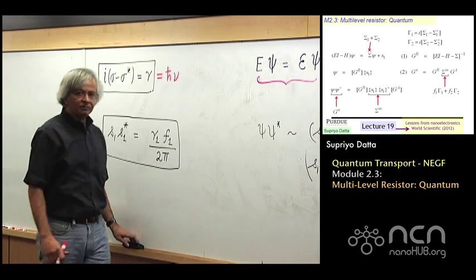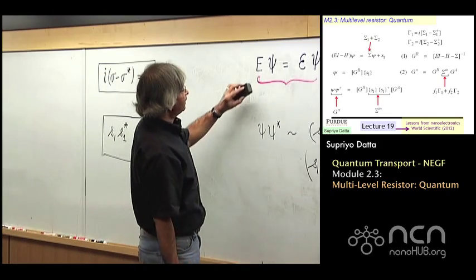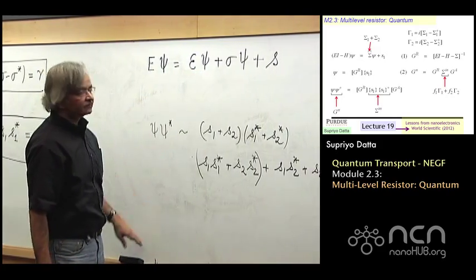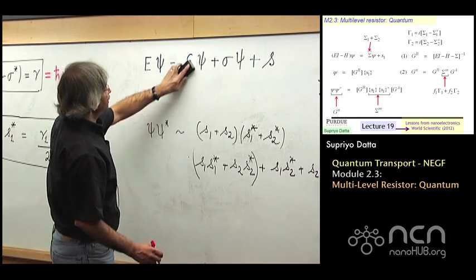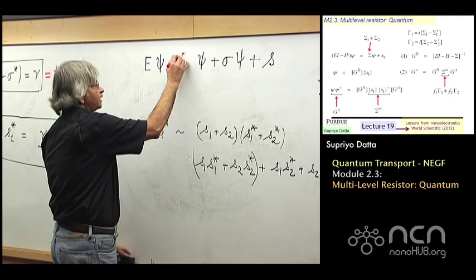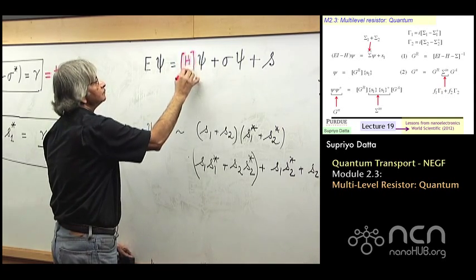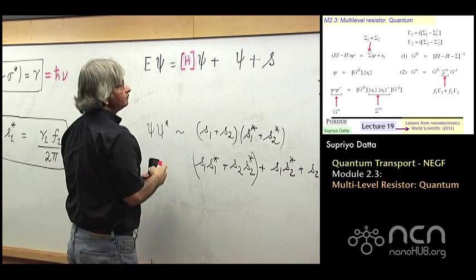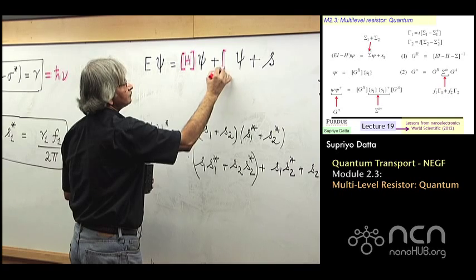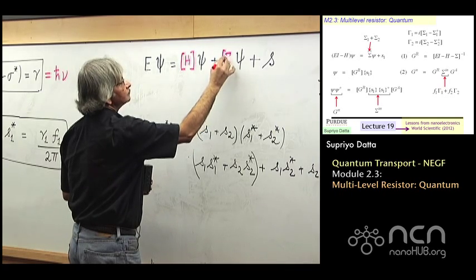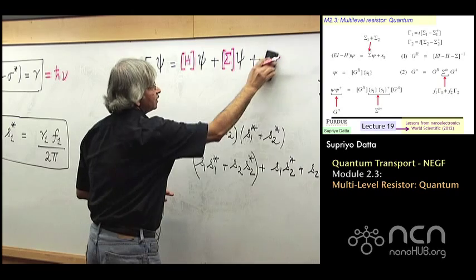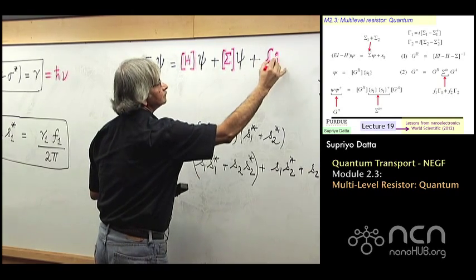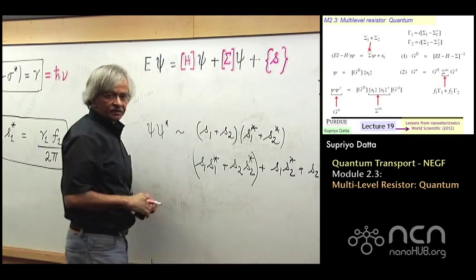Now if we did this with matrices, what would happen is that this psi here would be a column vector. This epsilon here would be a matrix, H. The sigma here would be a matrix again. And that S would be a column vector.